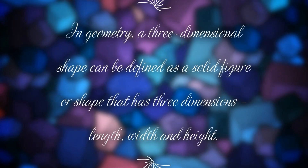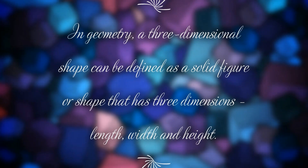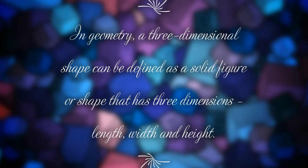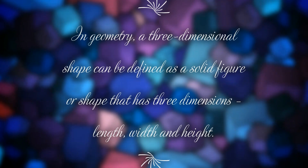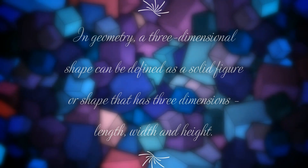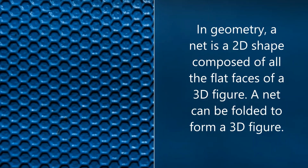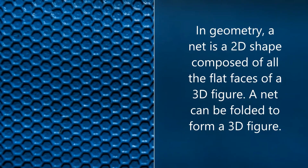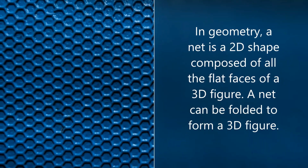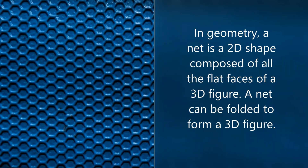In geometry, a three-dimensional shape can be defined as a solid figure or shape that has three dimensions: length, width, and height. In geometry, a net is a 2D shape composed of all the flat faces of a 3D figure. A net can be folded to form a 3D figure.